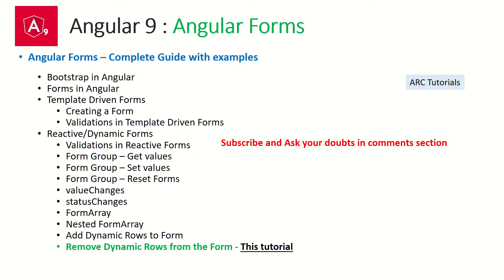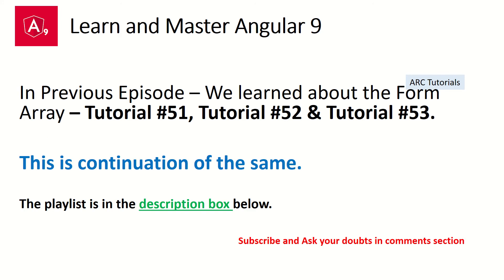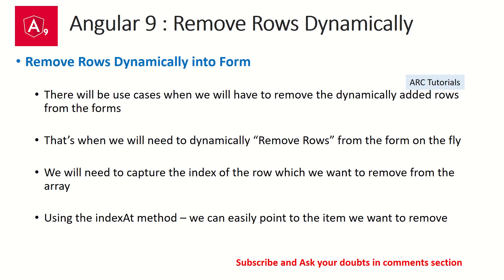This is the last of the series on Angular forms. We have covered different things like radio buttons and checkboxes in all these tutorials. Today's episode is a continuation — in the previous episodes we learned about form arrays in tutorial 51, the attributes of the array in tutorial 52, and in the last episode, tutorial 53, we learned how to add dynamic rows to the form array. Please make sure you've seen all three tutorials. The playlist is in the description box.